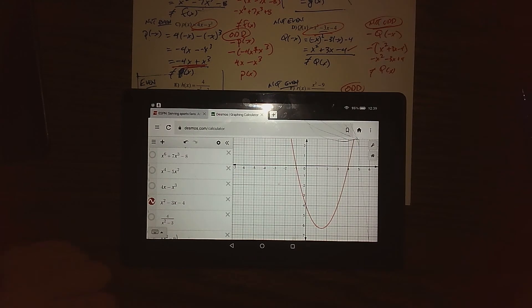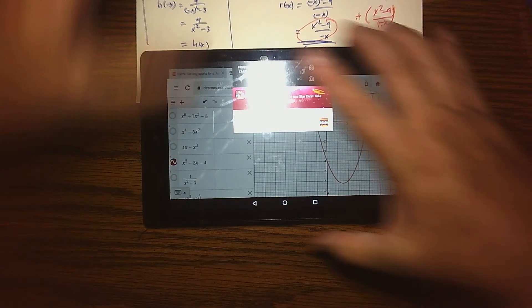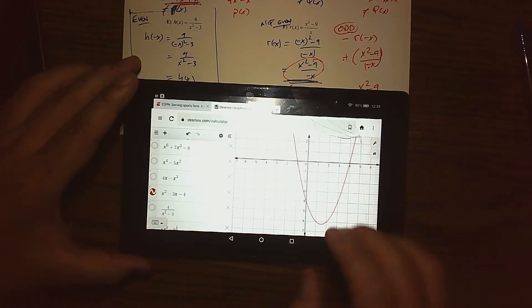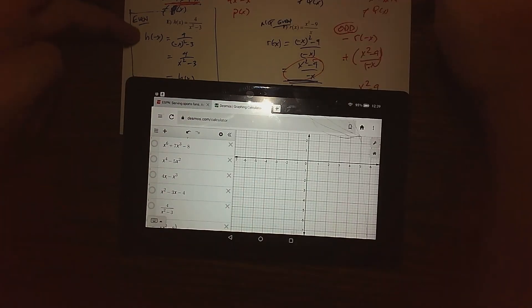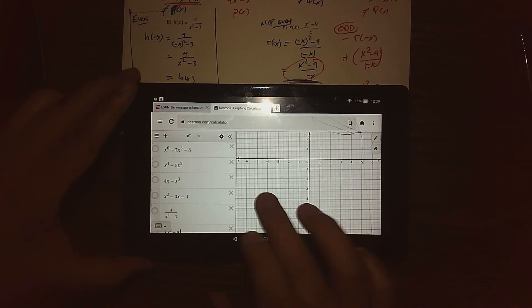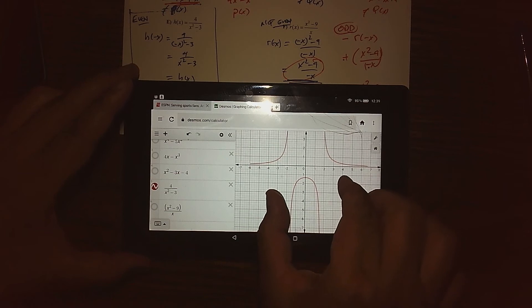Last but not least for these last two, this one we proved was even, so I expect there to be a nice symmetric graph with the y-axis. When I press that to graph, that's a little kind of visually hard to see.